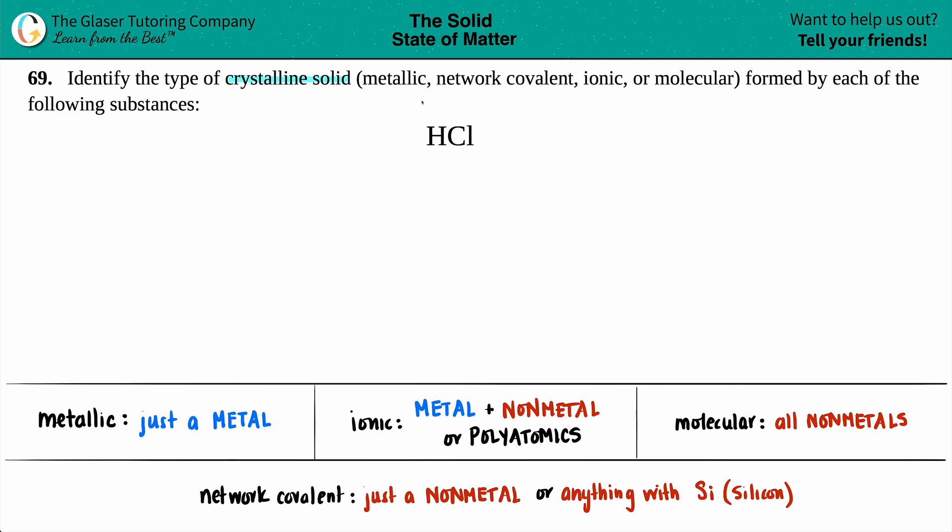So what type of crystalline solid will HCl form when it solidifies? Well, I wrote down the four different types of crystalline solids down here for you guys to memorize for your upcoming quiz or test. These are kind of like little cheat sheet, little tricks, but let's just go from left to right just to figure out which one HCl would be.